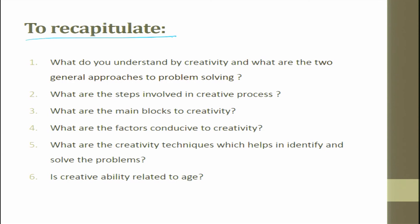To recap, in this chapter we tried to cover: what do you understand by creativity; what are the two general processes of problem solving; what are the steps involved in the creative process; what are the main blocks of creativity; what are the different factors conducive to creativity; what are the creative techniques which help in identifying and solving the problem — we saw many techniques; and lastly, what is the link between creative ability and age.